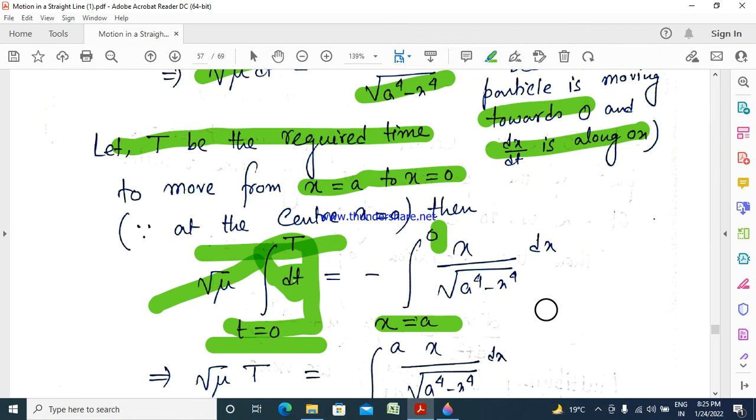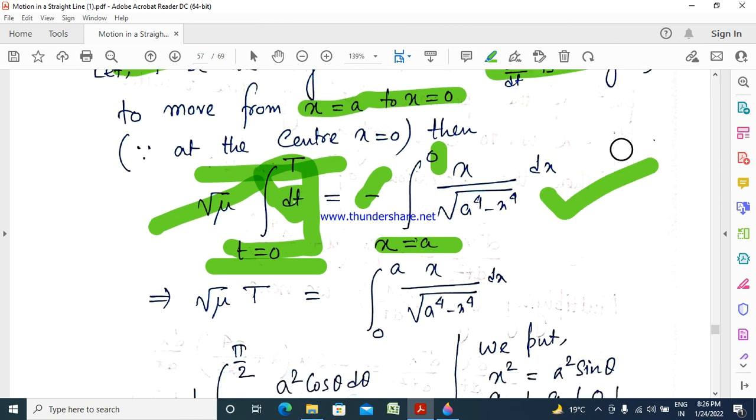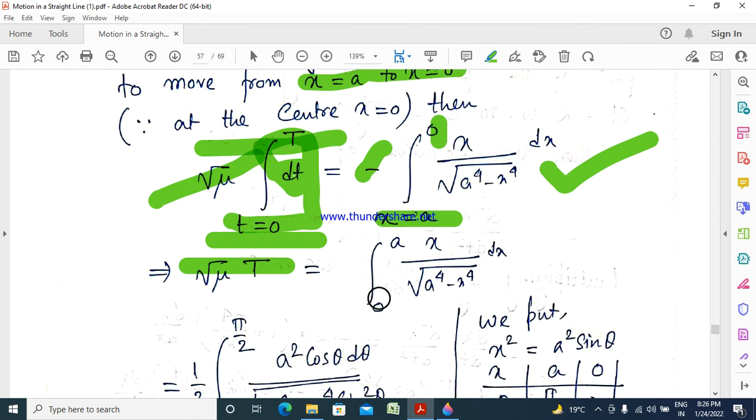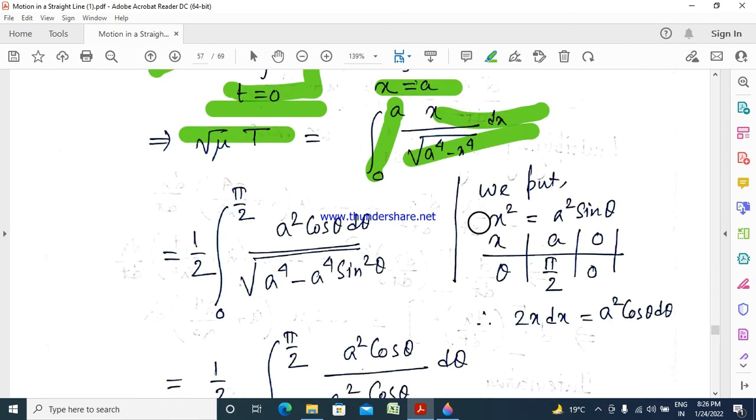Then root mu T equals integral from x equals a to 0 of minus x dx by root over a to the power 4 minus x to the power 4. That is root mu T equals integral 0 to a of x dx by root over a to the power 4 minus x to the power 4. We use the substitution x squared equals a squared sin theta.